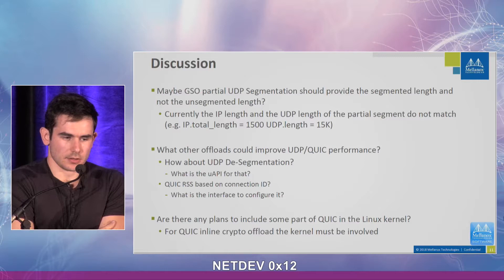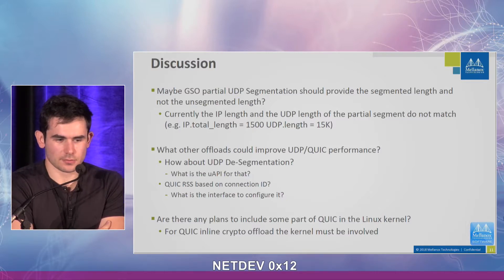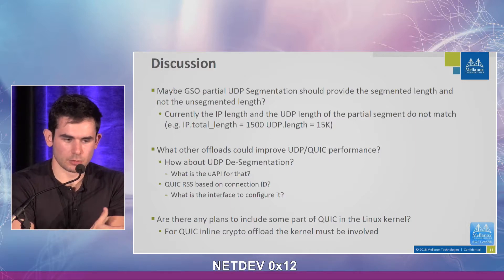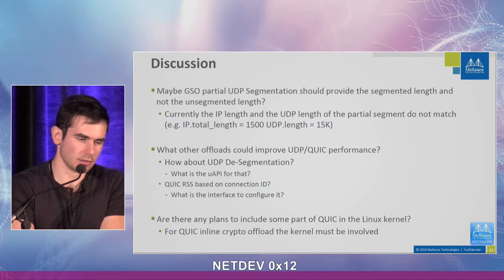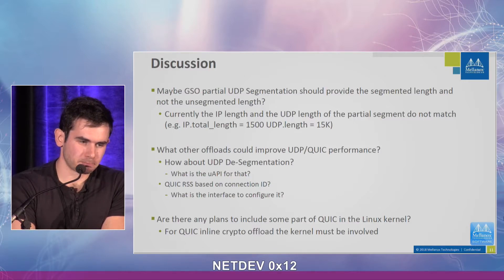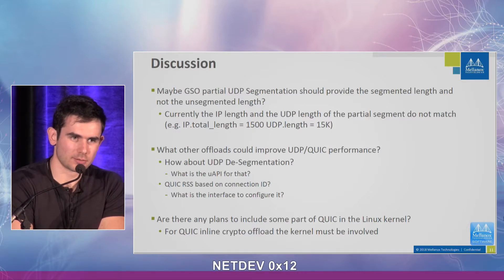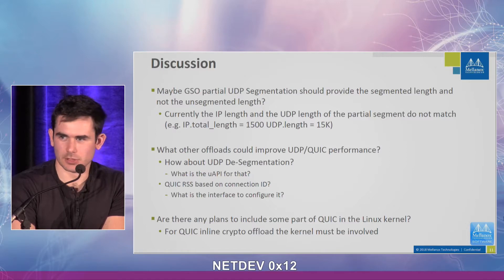Another point is using the connection ID for RSS. The QUIC guys mentioned it's less than 1%, so maybe it's not something of immediate interest, but existing hardware today can parse arbitrary protocols if configured to do so, and the connection ID could be parsed if hardware is configured for it. We don't have an interface today to ask hardware to define those custom headers and parse them for RSS, but this is something to consider in the future. Finally, if we are interested in having some of QUIC as part of the kernel, this is crucial to provide crypto offload for QUIC.